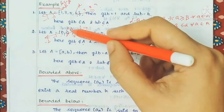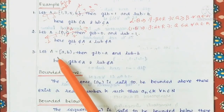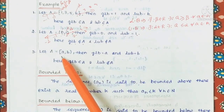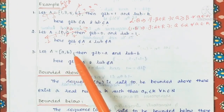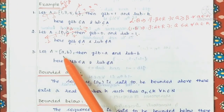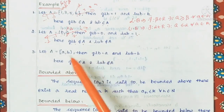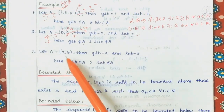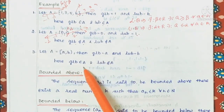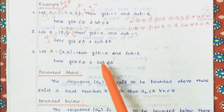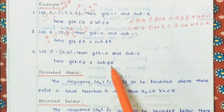For a closed interval [A, B]: the greatest lower bound is A and the least upper bound is B. The greatest lower bound belongs to the closed interval because it belongs to A. The least upper bound also belongs to the closed interval because it belongs to A.